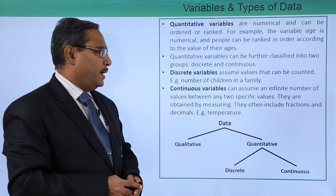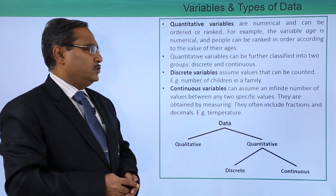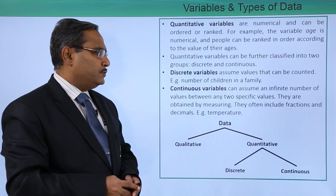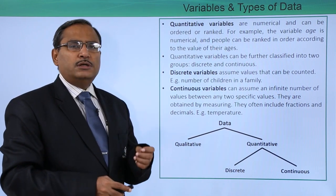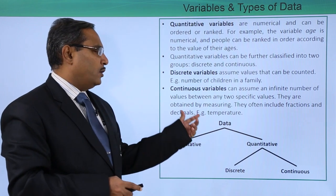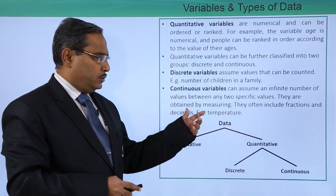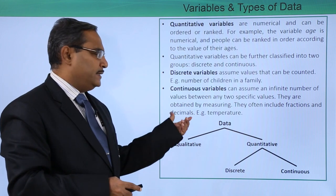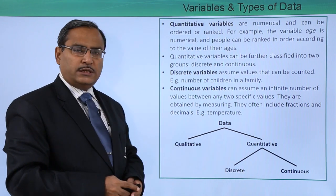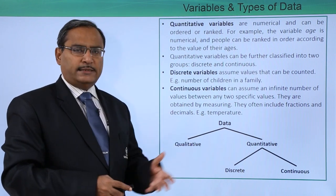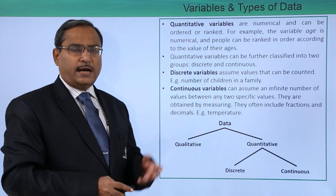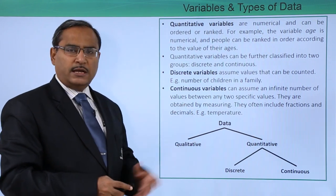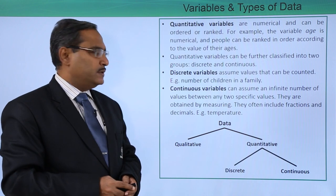Continuous variables can assume an infinite number of values between any two specific values and they are obtained by measuring. They often include fractions and decimals. Examples include temperature, height of a person, and weight of a person — these can be considered as continuous variables.